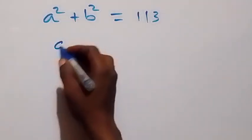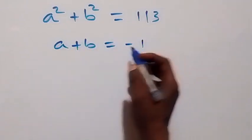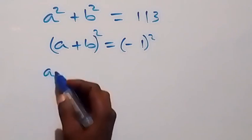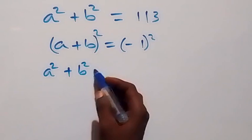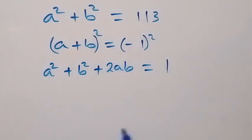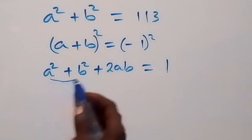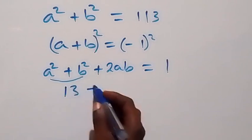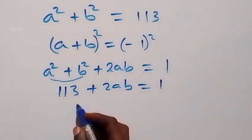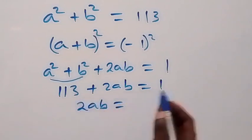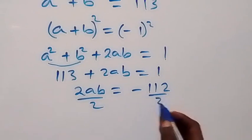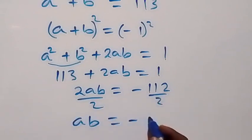From equation 3, a plus b equals minus 1. Let's square both sides. The expansion gives us a squared plus b squared plus 2ab equals minus 1 squared, which is 1. Substituting a squared plus b squared equals 113, we get 113 plus 2ab equals 1. Taking 113 to the other side: 2ab equals 1 minus 113, which is minus 112. Dividing both sides by 2, ab equals minus 56.